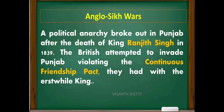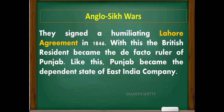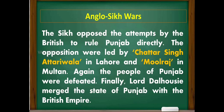Regarding the Anglo-Sikh Wars: political anarchy broke out in Punjab after the death of King Ranjit Singh in 1839. The British attempted to invade Punjab, violating the friendship pact they had with the Sikh ruler. In December 1845, a war broke out between the British and Punjab. Sensing the common danger, Hindus, Sikhs, and Muslims united to defeat the British. However, due to a few traitor leaders, they had to accept defeat and signed a humiliating Lahore Agreement in 1846. The British Resident became the de facto ruler of Punjab, making Punjab a dependent state of the East India Company.